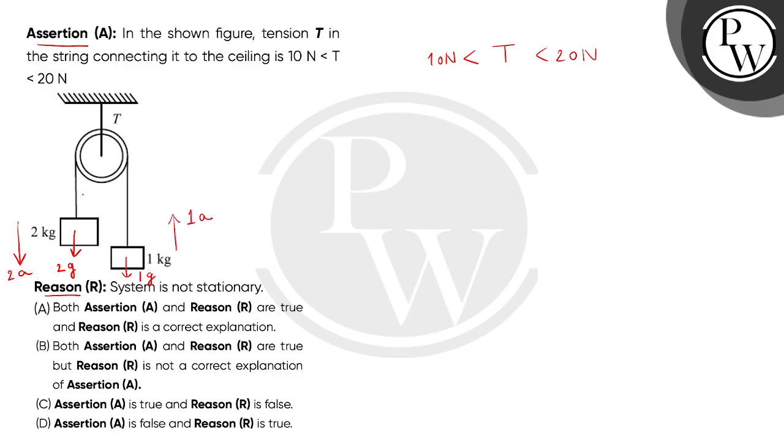Now the tension in the string will be the same in both parts and acting towards the support. So when we form a force balance equation for the 2kg mass, this is 2a equals to 2g minus T. This is equation number 1.